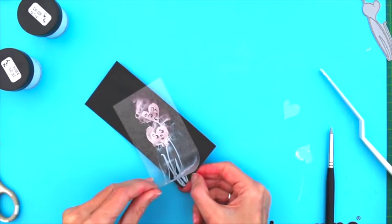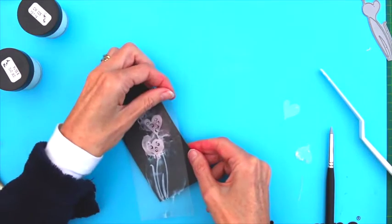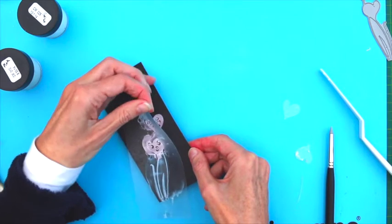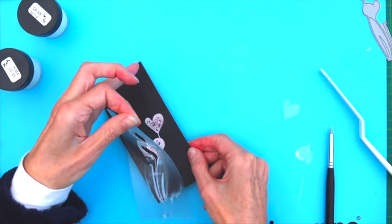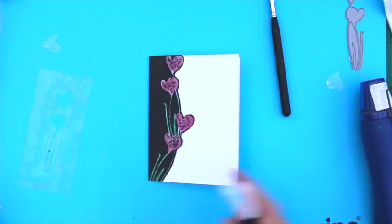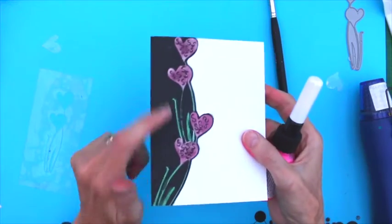Once this is finished, I'm then ready to carefully peel off my mask. I lift it in one direction and pull backwards away from the paste very carefully so as not to catch the paste as I pull it off. I then leave to dry before reapplying the stencil and repeating the process.